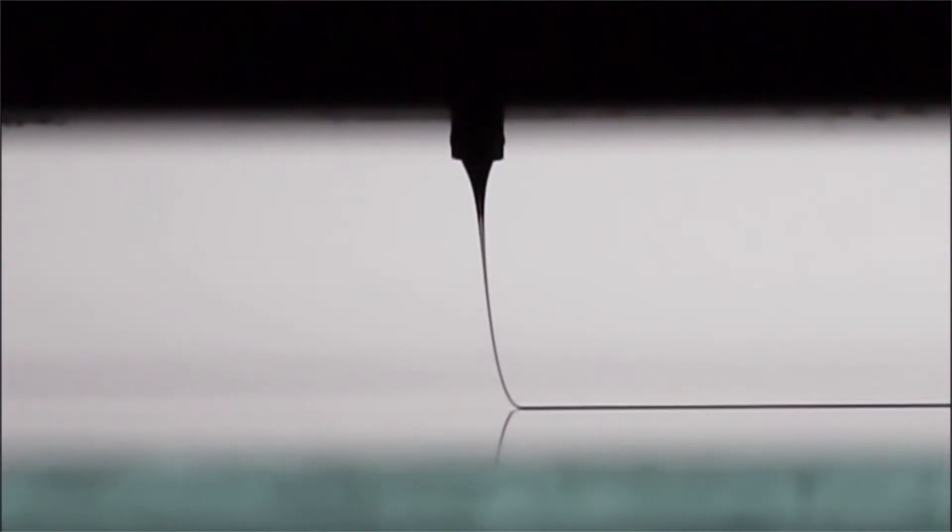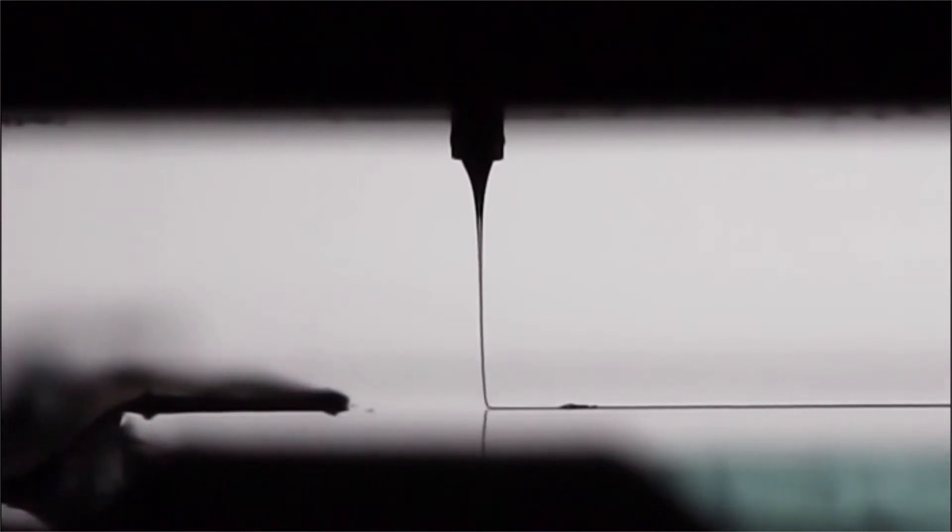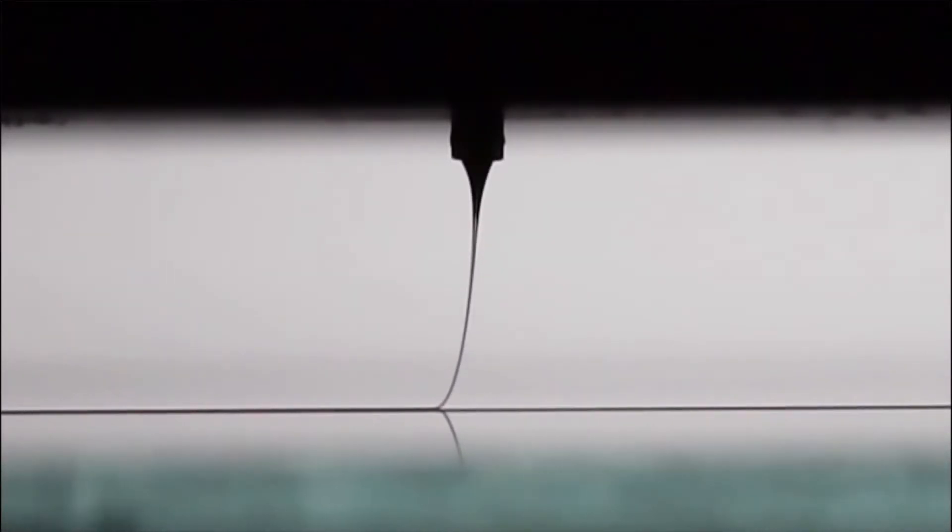One of the most recent developments is melt-electro-writing, a technique by which a molten material is pulled from a nozzle by a strong electric field into a thin jet.